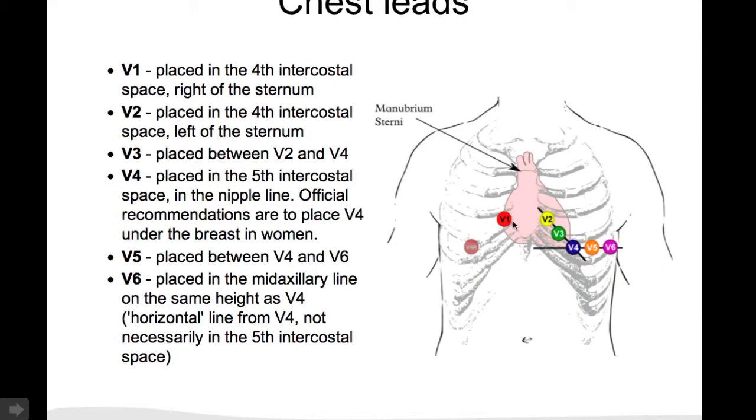The chest leads are V1 to V6. V1 is on the right of the sternum in the 4th intercostal space.